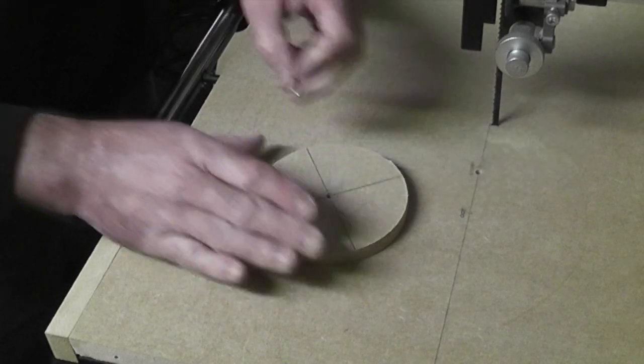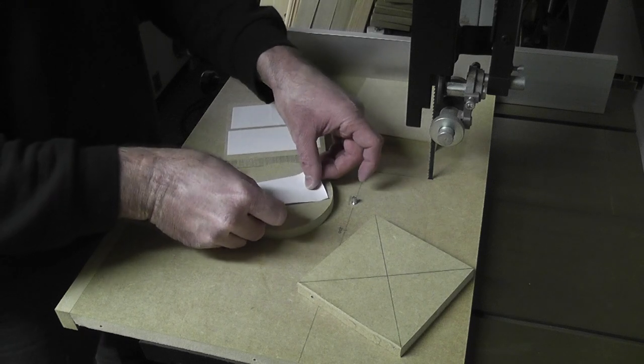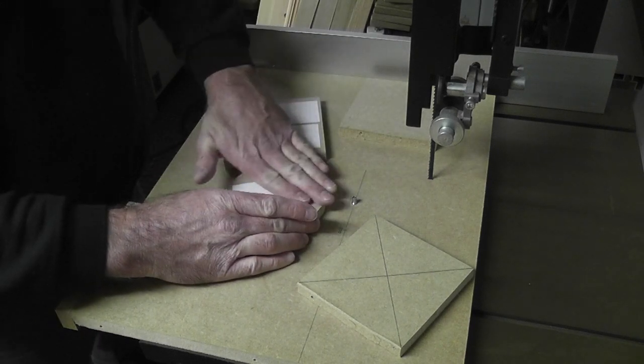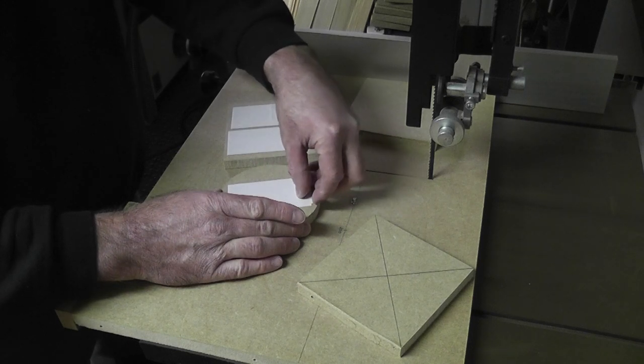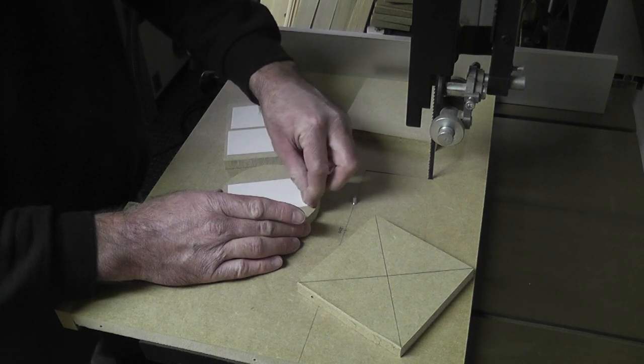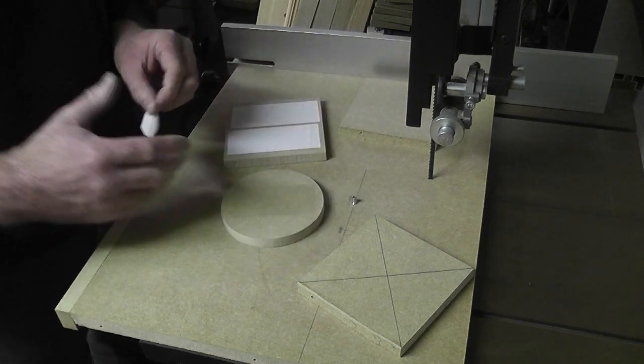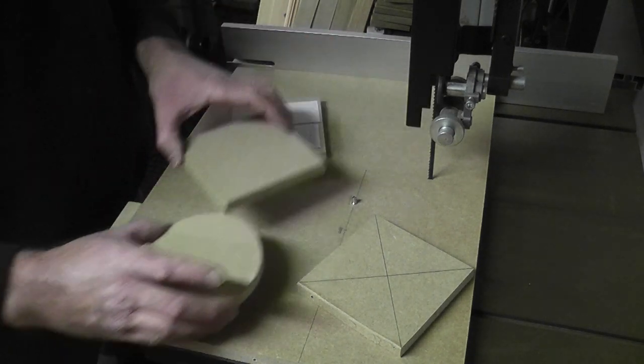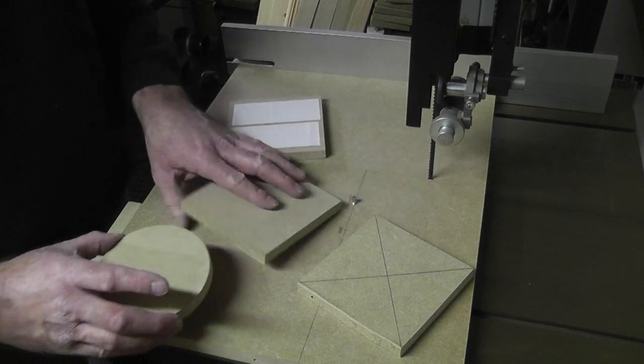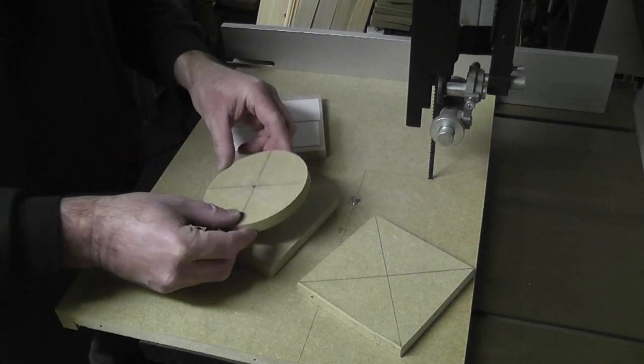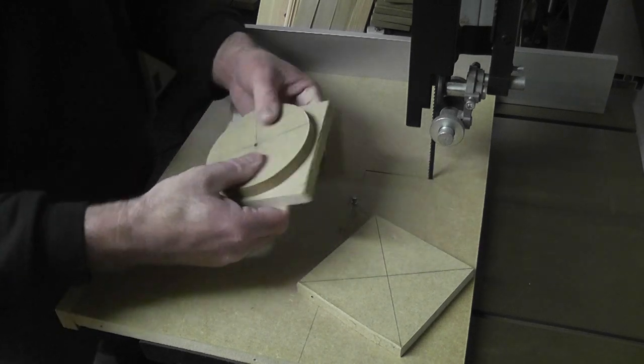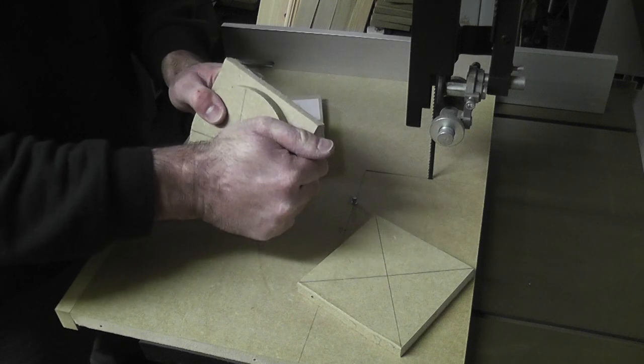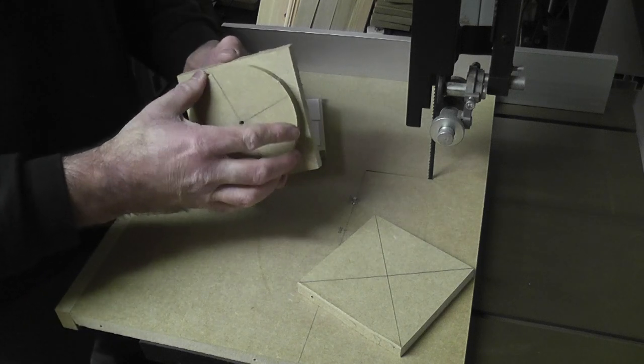Now if you don't want a hole showing in the coaster, there's a couple of simple things that you can do. One is to use double-sided tape and attach the coaster you want cutting into a pre-cut piece.